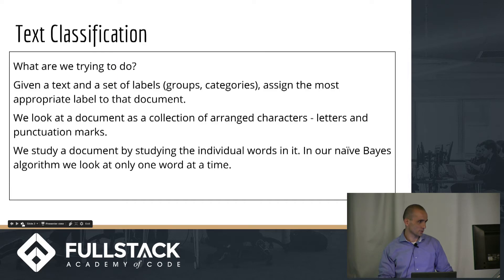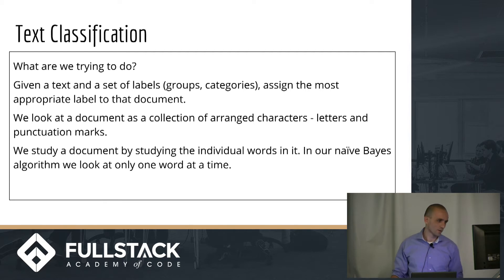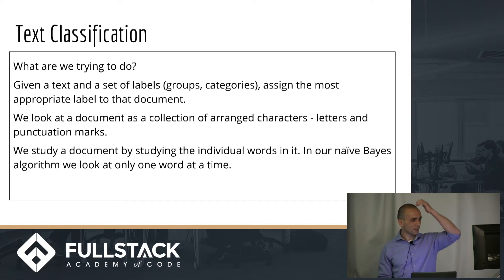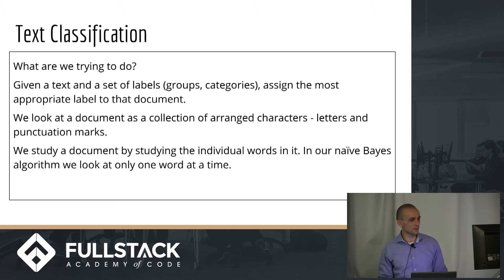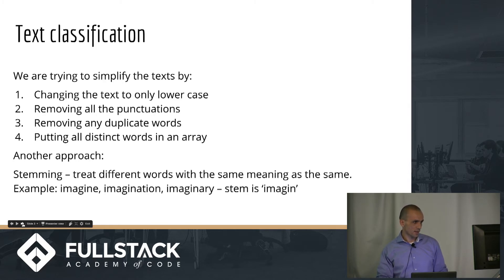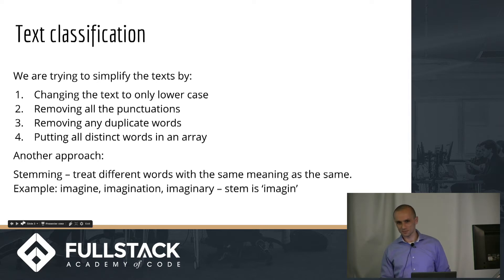Text classification is basically classifying or grouping a text based on certain labels. For example, you might label a text as spam or not, or as English versus another language. What we focus on is the words in the text — we don't care about punctuation marks. We simplify the text by making it all lowercase, removing punctuation, and also removing duplicate words.